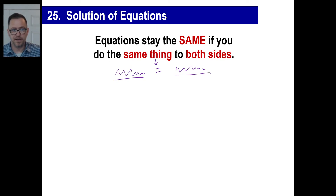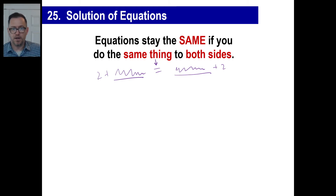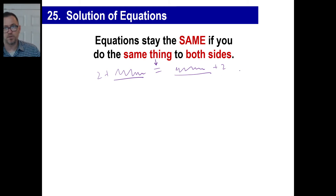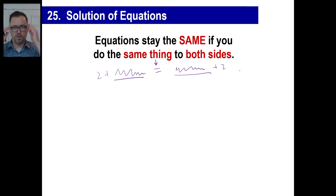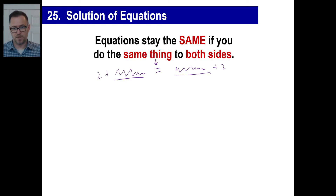So if you do something over here — say, add 2 to one side — you're going to have to add 2 over here as well. And if you do times 3 to this whole thing, you're going to go times 3 to that. Let's just focus on keeping stuff equal by doing the same thing to both sides.